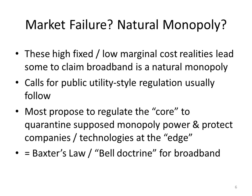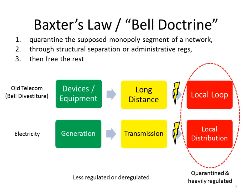Stated differently, this is an application of what's called Baxter's Law, or the Bell Doctrine, to broadband. Baxter's Law is named after William Baxter, an economist who served in the antitrust division during the Reagan administration. Basically, as applied to AT&T, the idea is to quarantine the supposed monopolistic segment of a network through structural separation or administrative regulation, then free up the rest. For old telecommunications networks, specifically Ma Bell, the local loop and local transmission services were quarantined as monopolistic, while long distance was largely deregulated, as were devices and equipment. This same model can be seen in the electricity world, where generation and transmission are far less regulated than local distribution, which is tightly regulated and even price controlled.